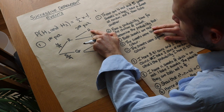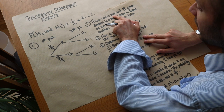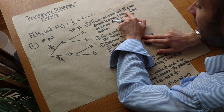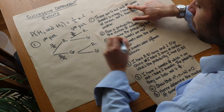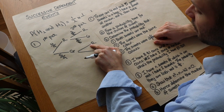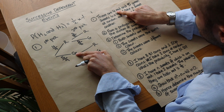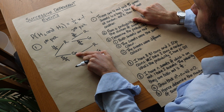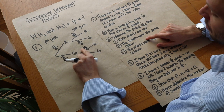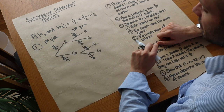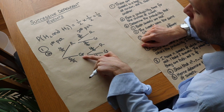Now the second pick depends on the first. If the first pick was red, we've eaten one red sweet, leaving three red and five green — eight sweets total. So the probability of red on the second pick is three eighths, and green is five eighths. If the first pick was green, we still have four red but now four green left — eight total — so red is four eighths and green is four eighths. Notice the probability of red on the second pick differs depending on what was picked first.